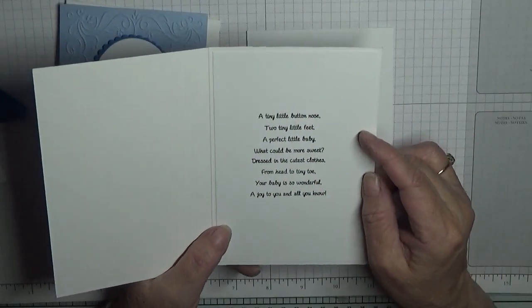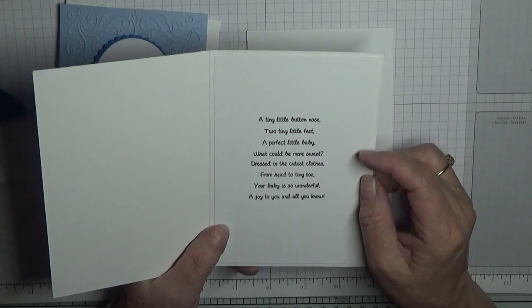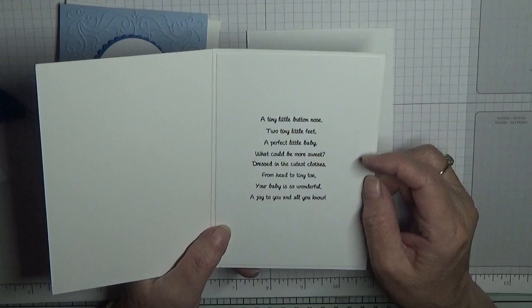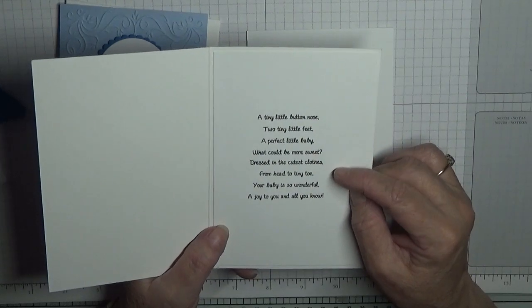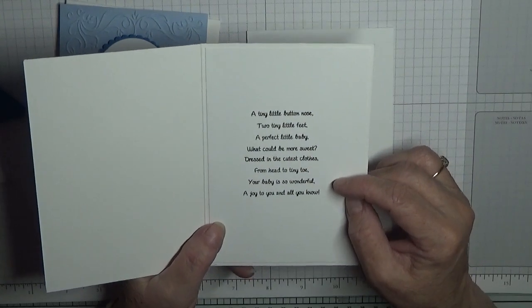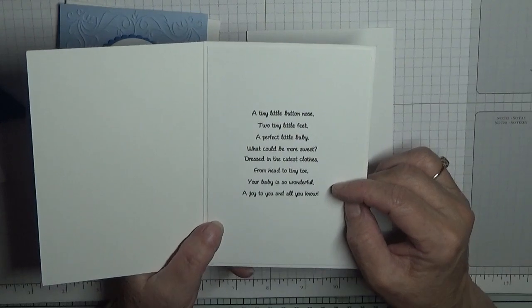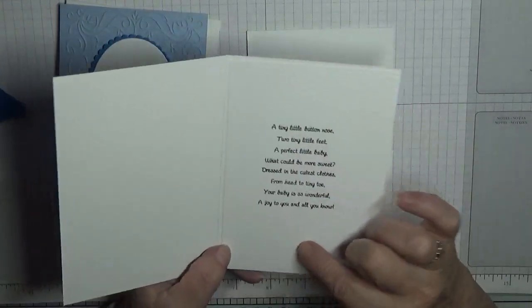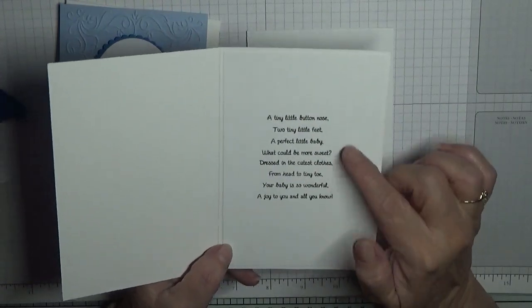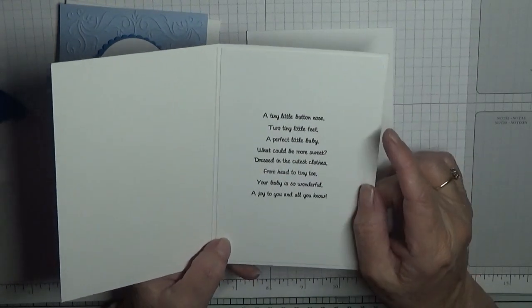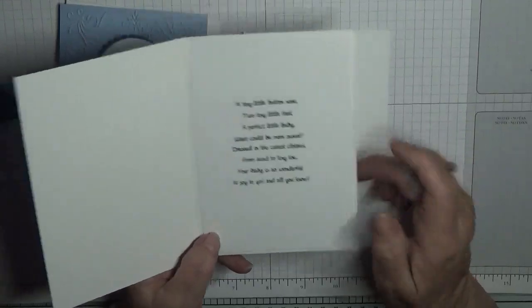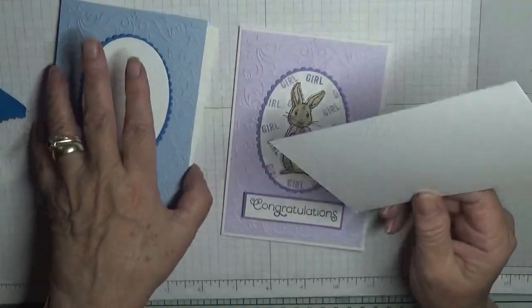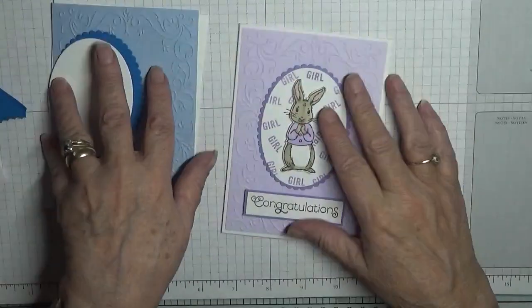Inside this one I have actually put a little verse: a tiny little button nose, two tiny little feet, a perfect little baby what could be more sweet, dressed in the cutest clothes from head to tiny toes, your baby is so wonderful, a joy to you and all you know. The trouble is I just gave the stamp set to my sister that has this, so when she gives it back I'd love to stamp the inside, but I shall pop that in there and do that at a later date.